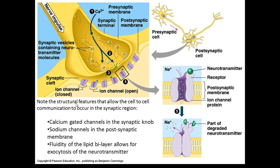This is a diagram showing how neurotransmitters work. The transfer of information that occurs at the synapse is a classical example of cell-to-cell communication. The membrane is specifically adapted for this task. The synaptic knob membrane contains voltage-gated calcium channels. The postsynaptic membrane contains a receptor-bearing sodium channel, and the fluidity of the membrane allows for the fusion of vesicles.